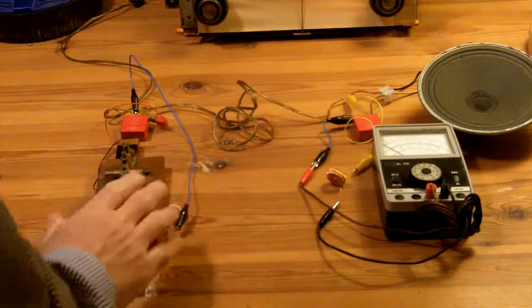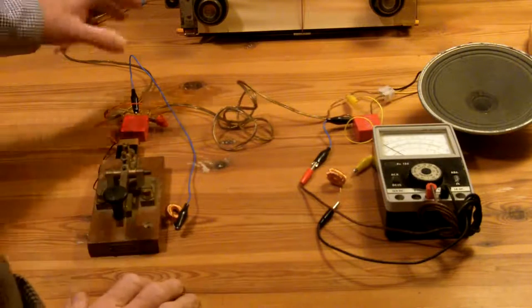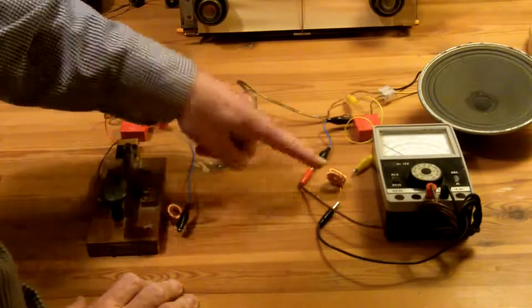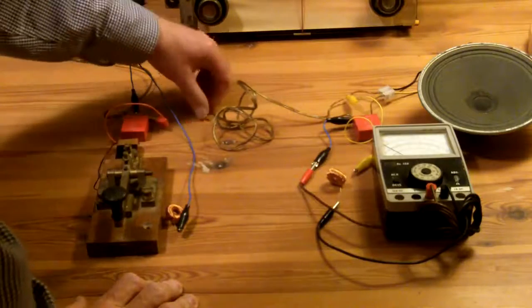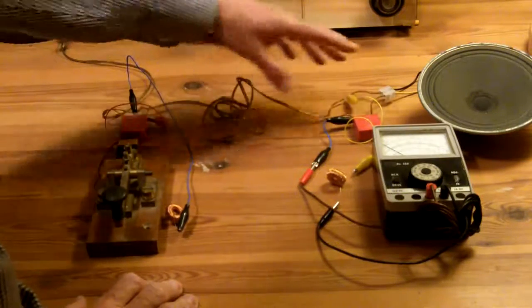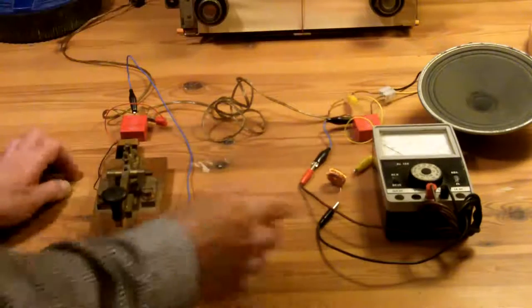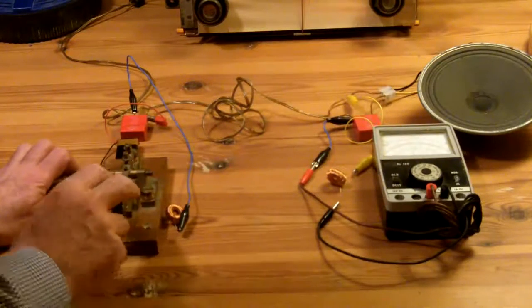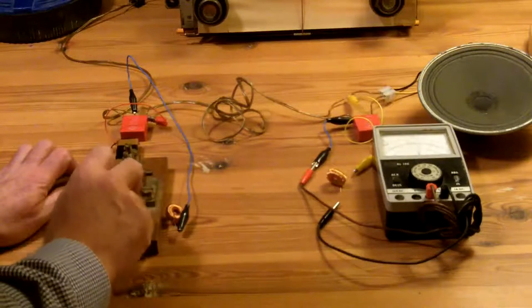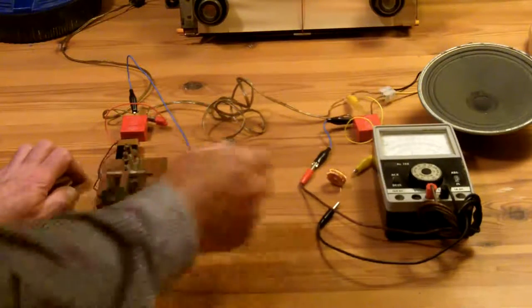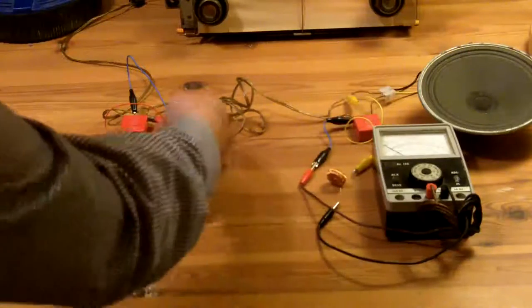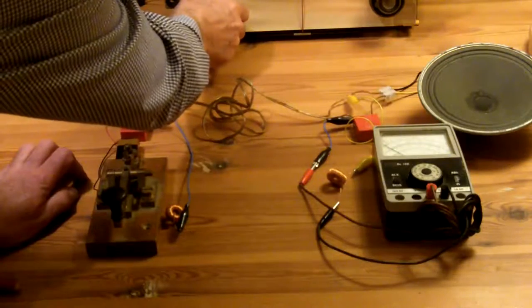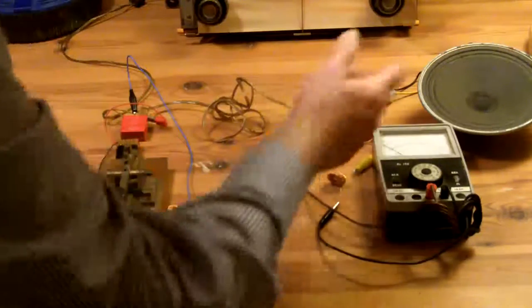So now I've got the Morse key connected as it was before to the meter, through the battery, with the chokes at each end. And I'm using this bit of wire, which is also carrying the signal to the speaker. And again, as I operate the key, I hope I'm getting that. So you can see, we're working through there. Now if I turn the radio on, I've got the signal there.